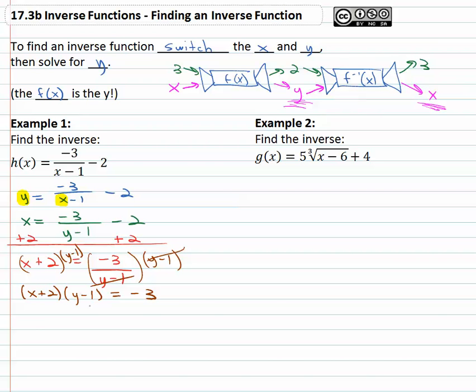Remember we're trying to get the y alone, so we need to get rid of the part with x in it. We'll divide out the x plus 2 group. Those are gone, and now we have y minus 1 equals negative 3 over x plus 2.